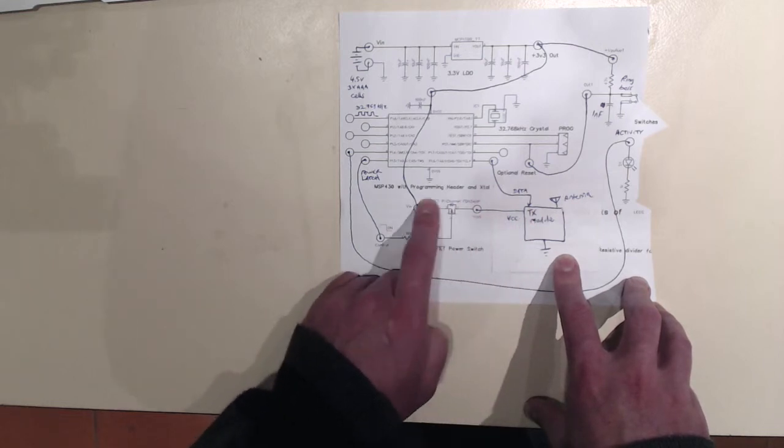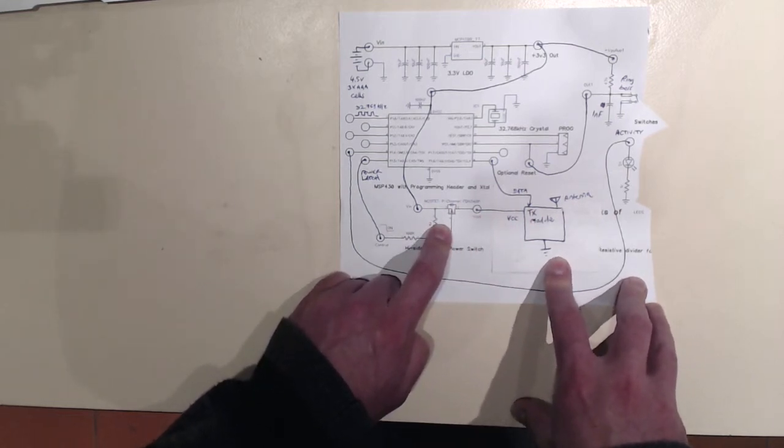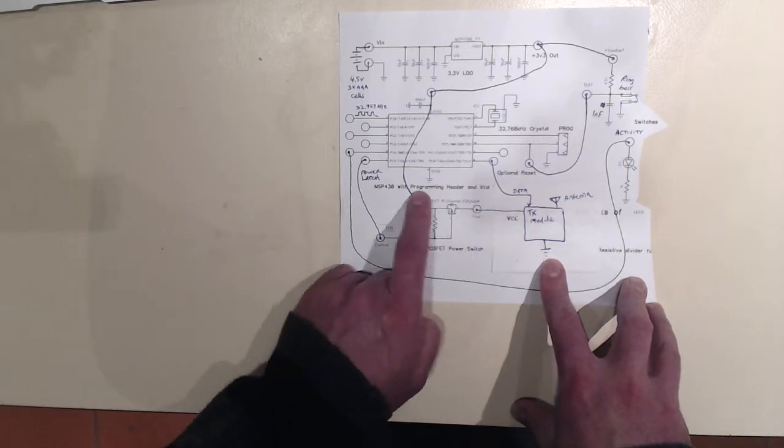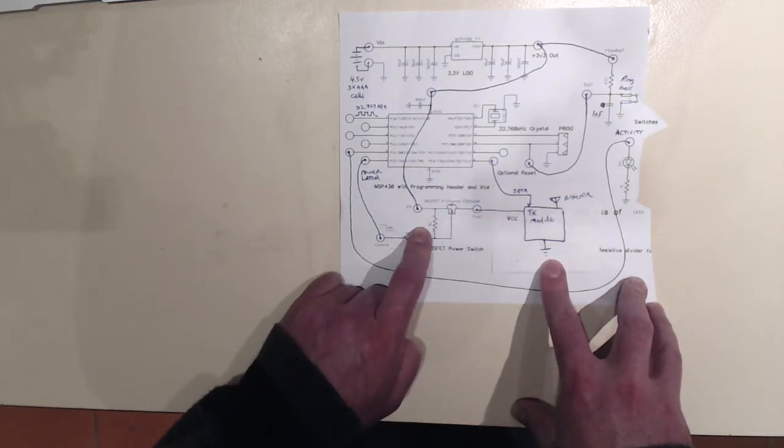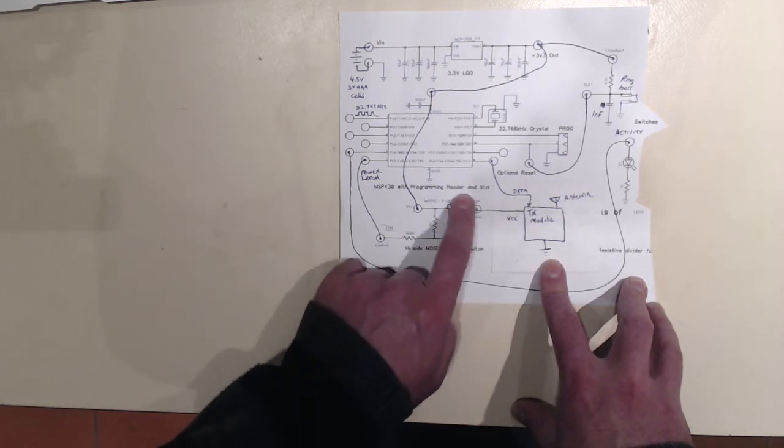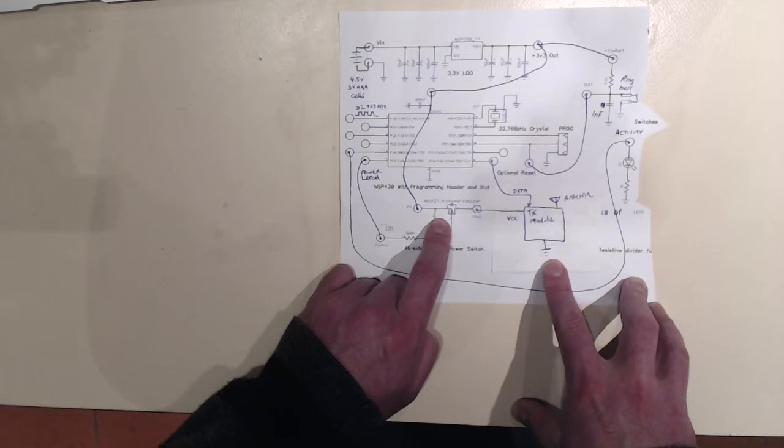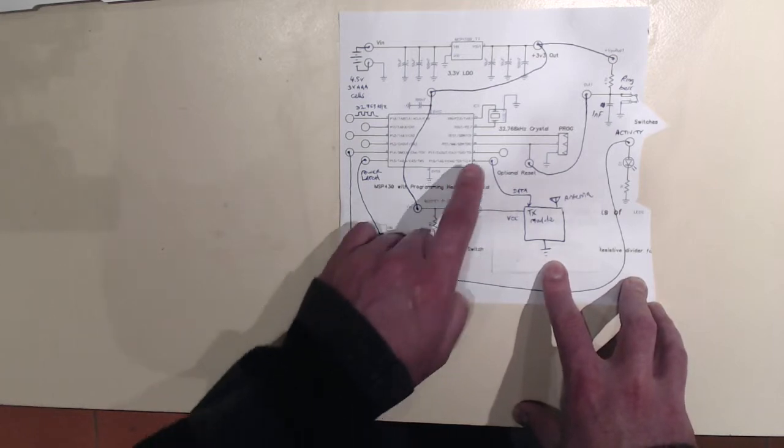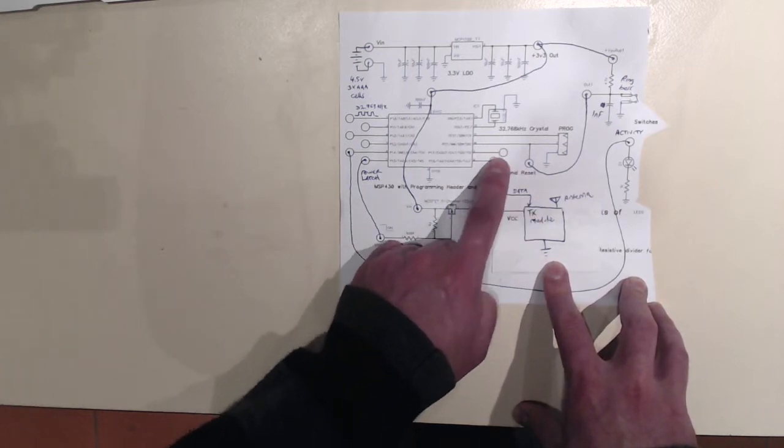But I had this P-channel MOSFET on hand. It had proven itself in other projects. So I thought, might as well hook it up, control it in this manner. And that in any event is guaranteed to switch a lot more current than could be sourced from one of these microcontroller pins.